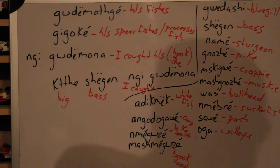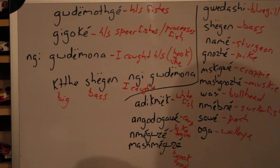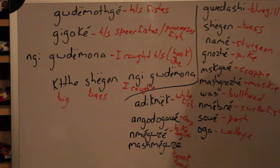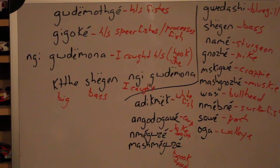So let's go through these now. We have goedemojgye — he or she fishes. We have gigoke — he or she spear fishes, or does any process of processing a fish. I caught him or her — I caught him or her with a hook and line.